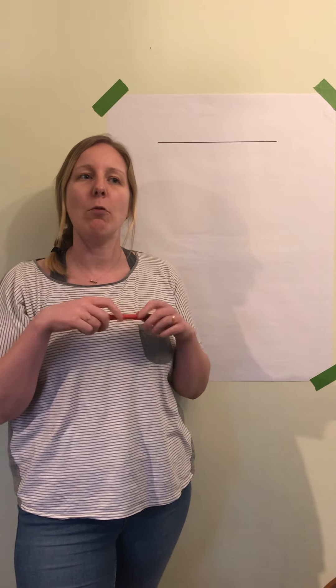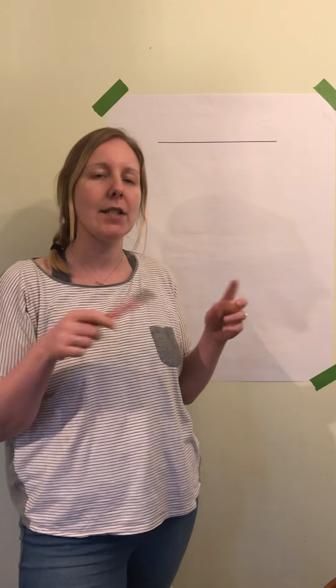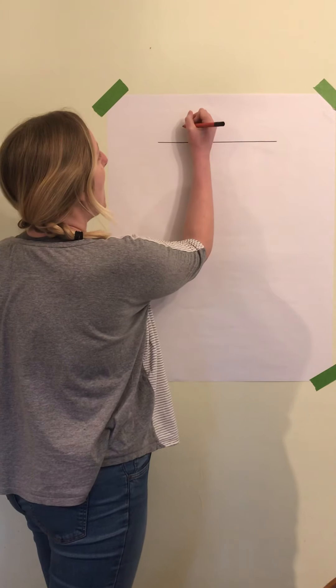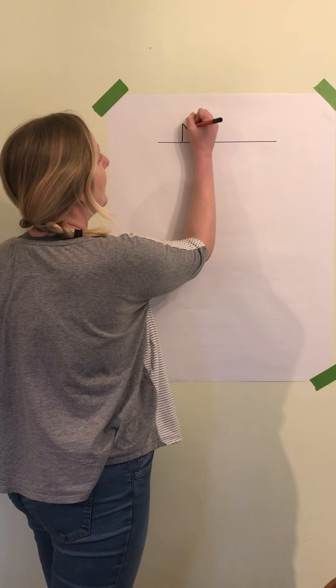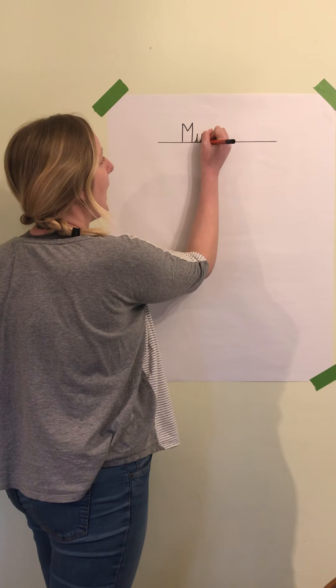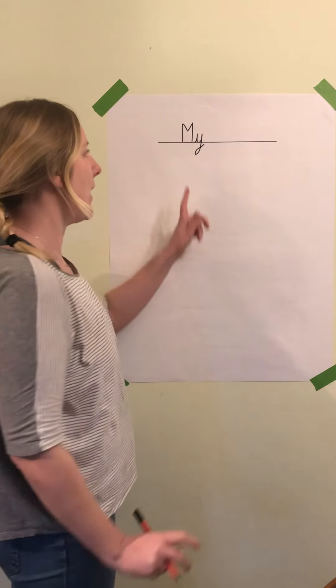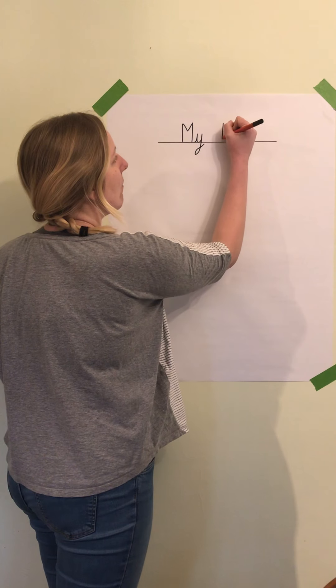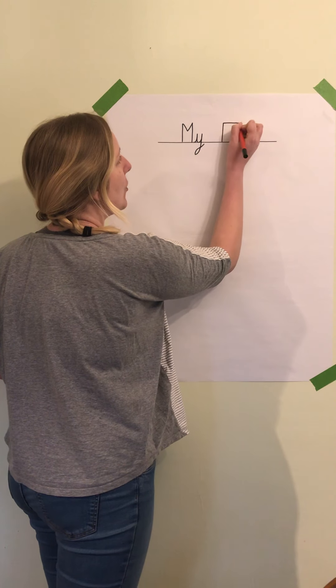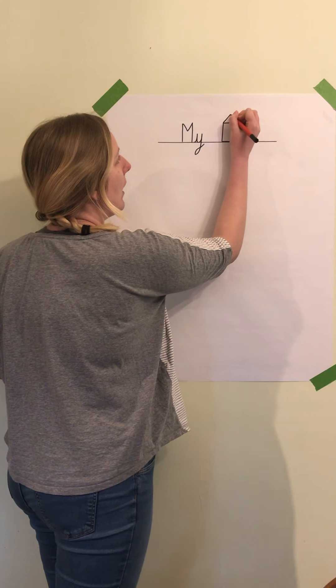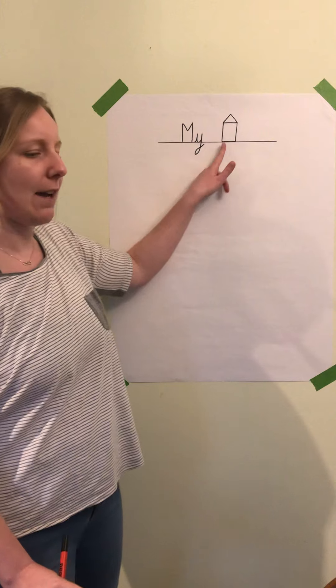So my title is going to be 'my house.' I'm going to write the word 'my'—that's a very tricky word—'my house.' Instead of writing the word house, I'm just going to draw a quick easy picture of a house. My house.